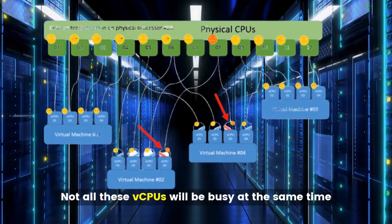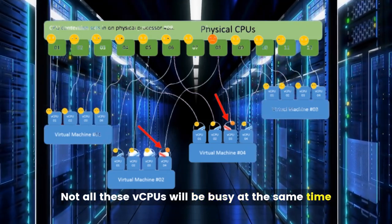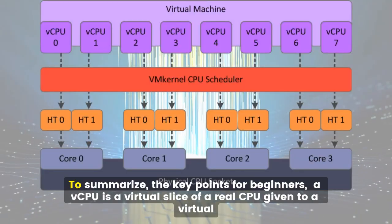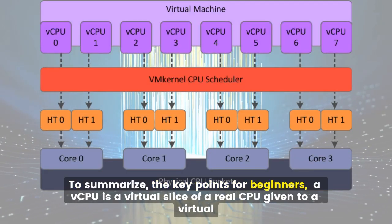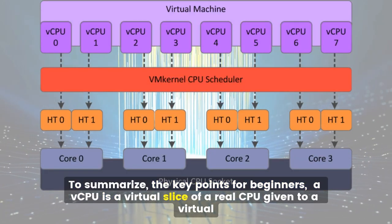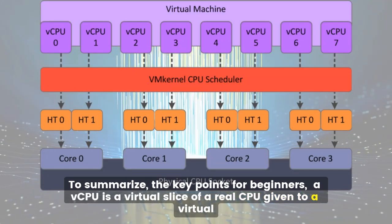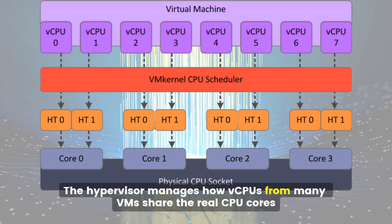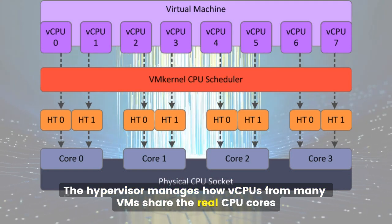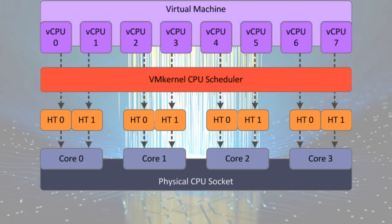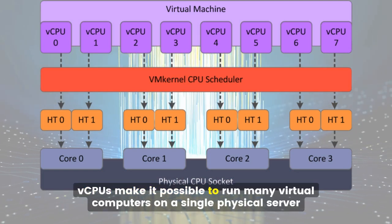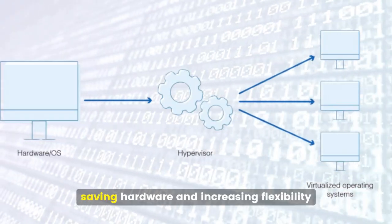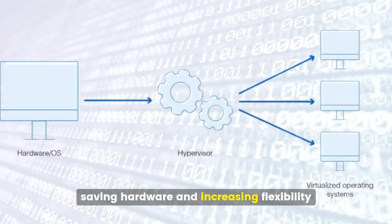Not all vCPUs will be busy at the same time, so this sharing works well for many applications. To summarize the key points: a vCPU is a virtual slice of a real CPU given to a virtual machine. The hypervisor manages how vCPUs from many VMs share the real CPU cores. vCPUs make it possible to run many virtual computers on a single physical server, saving hardware and increasing flexibility.